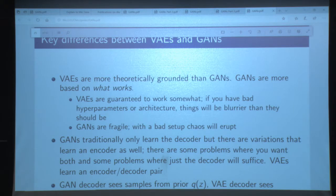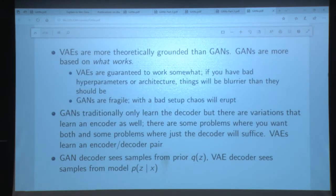Just to compare: VAEs are guaranteed to work but they're doing a lower bound, so they'll pretty much end up blurry. GANs might not work at all, but when they work well they work really well. With GANs you only learn the decoder part traditionally — there are some extensions which learn the encoder — but you're just learning going from Z to X, and having that function doesn't mean you have a function from X to Z.